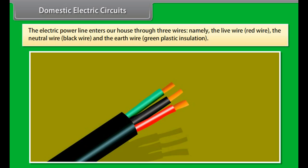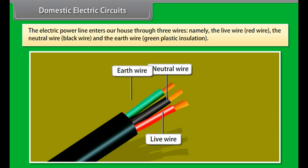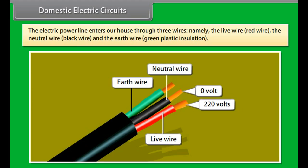The electric power line enters our house through three wires. Namely, the live wire, red wire, the neutral wire, black wire, and the earth wire, green plastic insulation. The live wire has a high potential of 220 volts and the neutral wire has zero potential.